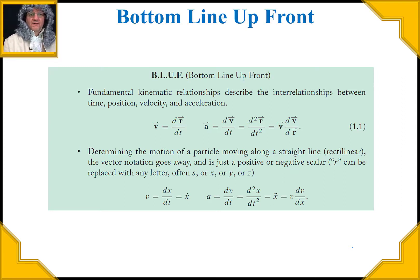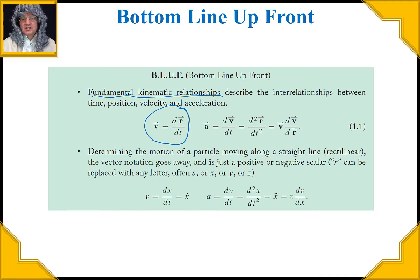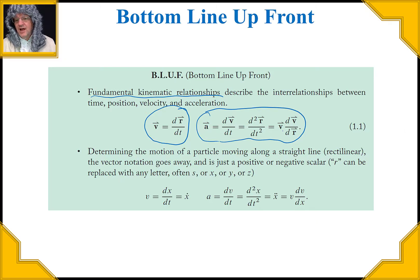The bottom line up front for today: these are the fundamental kinematic relationships you really want to memorize and understand. We define velocity as the time rate of change of position — note the arrows on top indicating vectors, just like in statics. Acceleration can be written a couple of ways: as the time rate of change of velocity, as the second derivative of position with respect to time, or as velocity times the derivative of velocity with respect to position — that wildcard form comes up often.